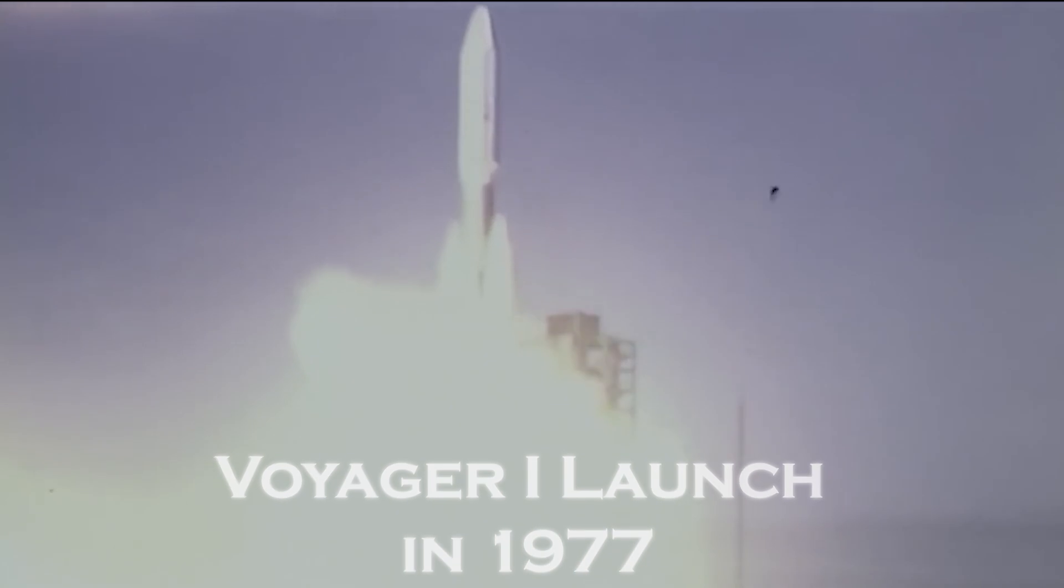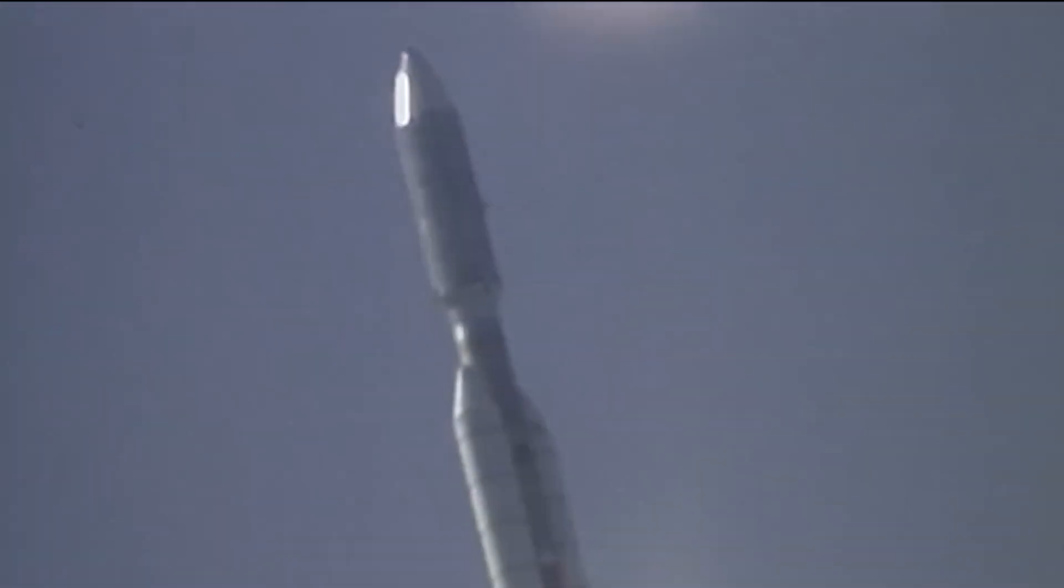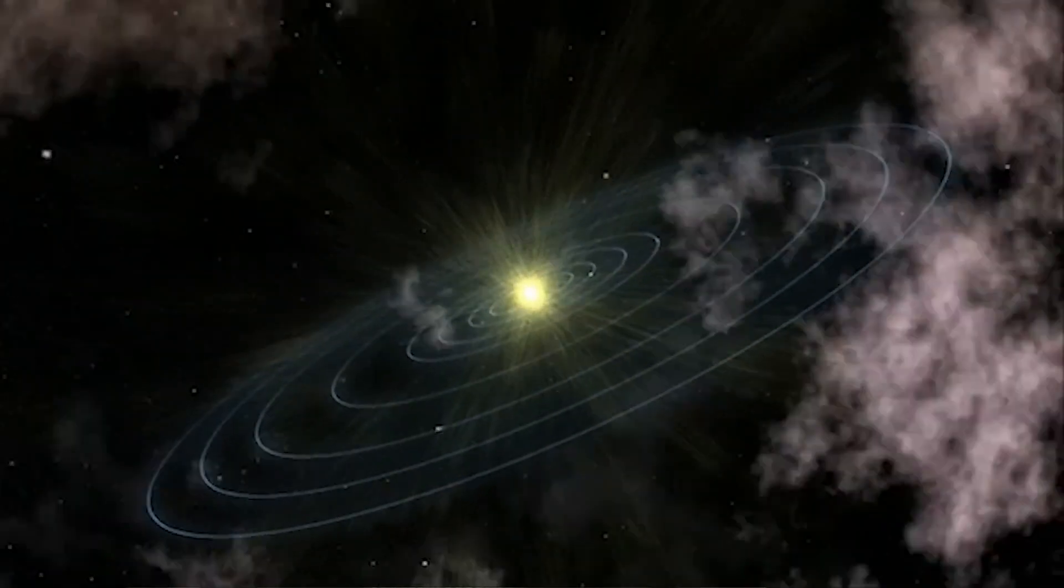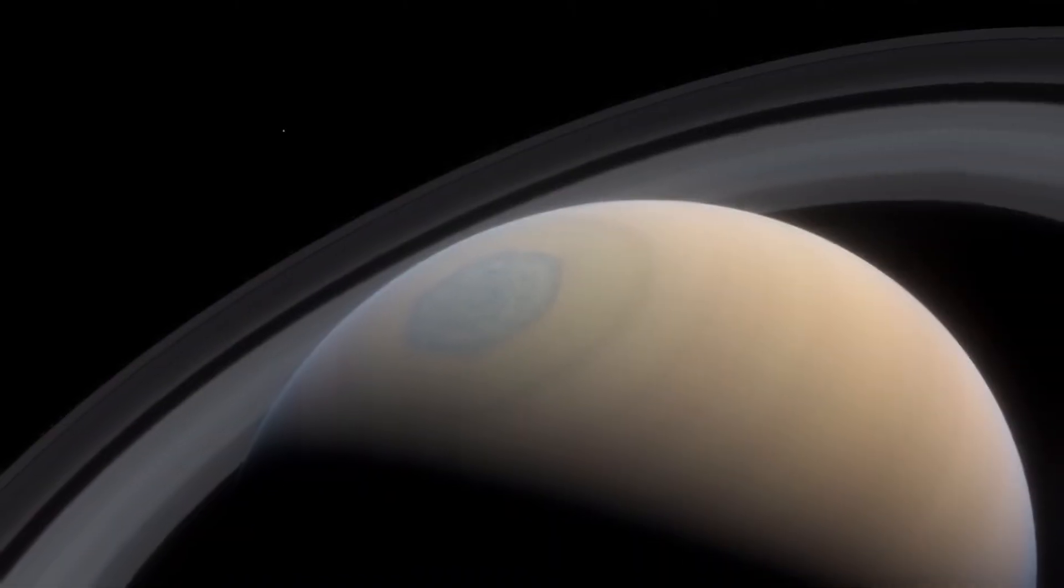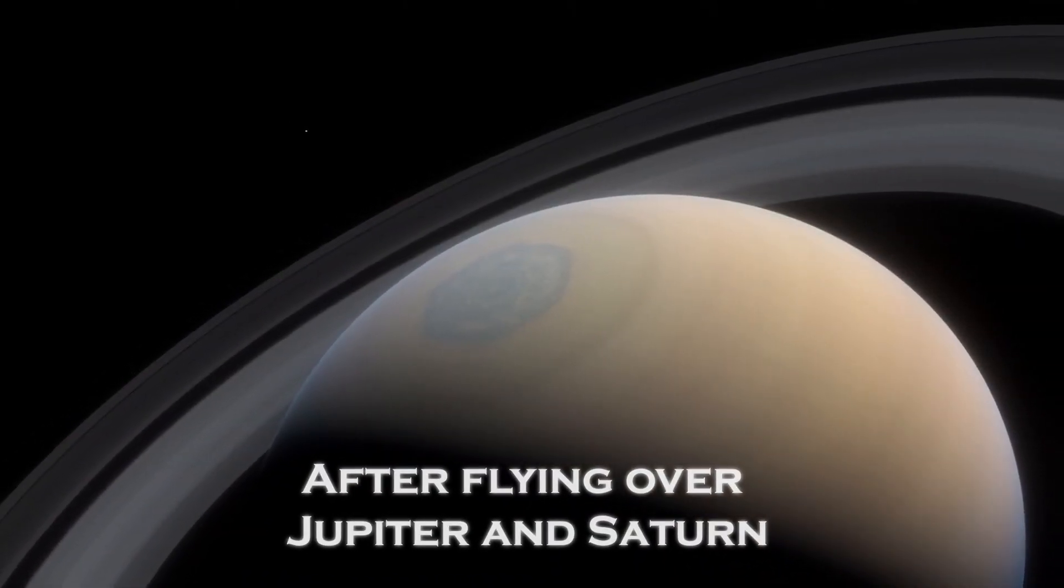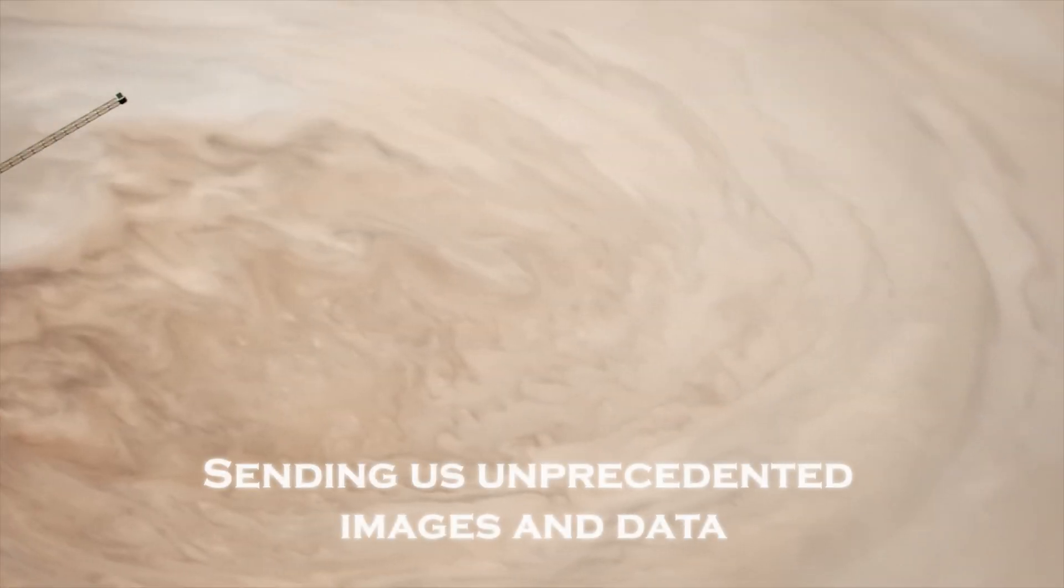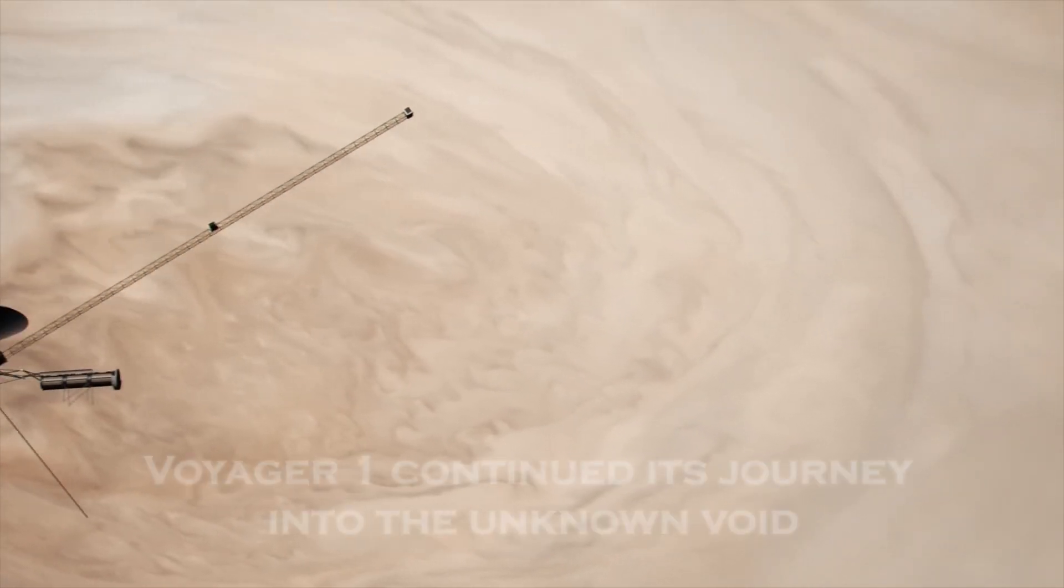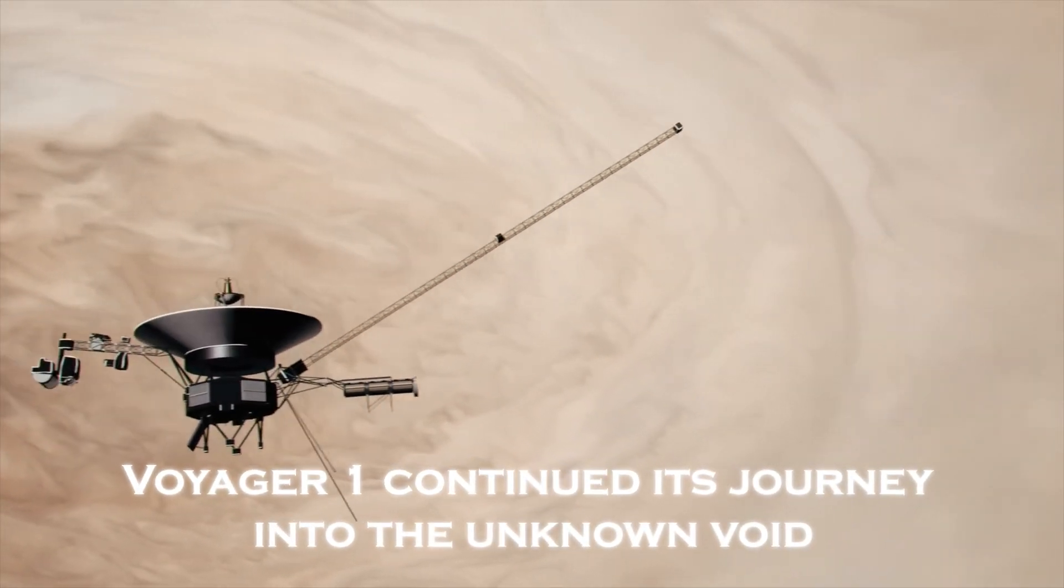Launched in 1977, Voyager 1 had a clear mission to explore the outermost planets of our solar system, collect data, and one day perhaps cross that invisible boundary that separates our solar system from interstellar space. After a flyby of Jupiter and Saturn, sending us unprecedented images and data, Voyager 1 continued its journey into the unknown void.